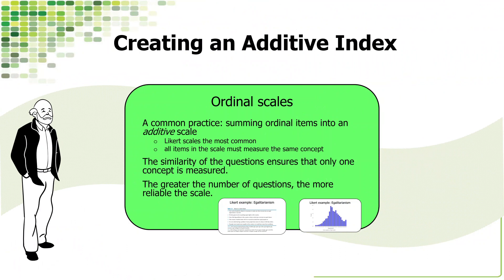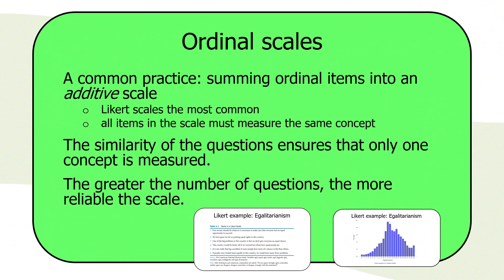This is a very common practice in political research to sum ordinal items into an additive scale. We can get very reliable and useful scales of characteristics by combining codes of ordinal level variables. There's a very common type of ordinal scales called a Likert scale.